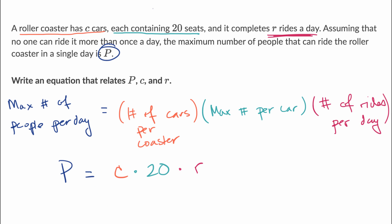And we're done. We could rearrange this a little bit. We could write this as P is equal to 20 times CR. And we're done.